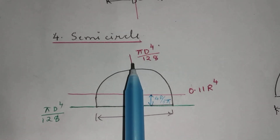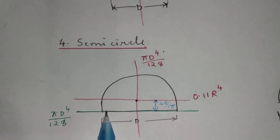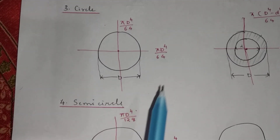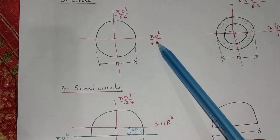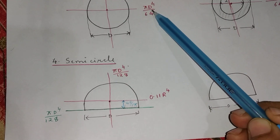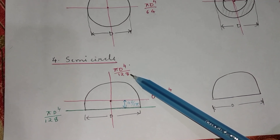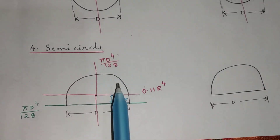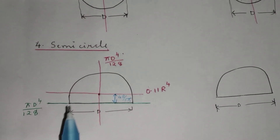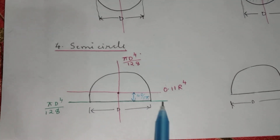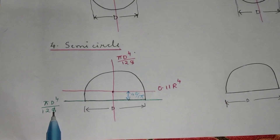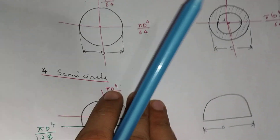For the axis perpendicular to the straight side and passing through the centroid, the moment of inertia is π D raised to 4 by 128. The axis passing through the straight side of the semicircle also gives π D raised to 4 by 128.